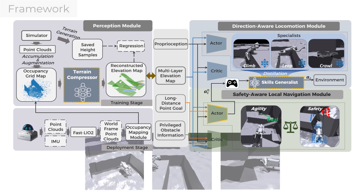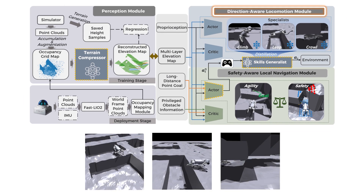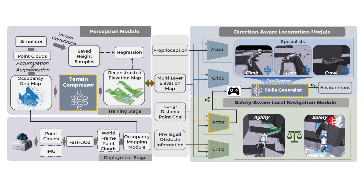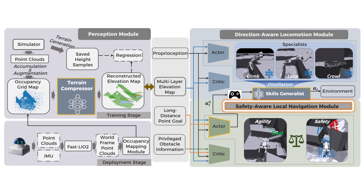We first train several locomotion skills which are distilled into a single locomotion policy. The local navigation policy is then trained to navigate long-distance targets with safety and agility. A terrain compressor extracts the multi-layer elevation map from occupancy grid maps, trained in simulation and deployed in the real world.